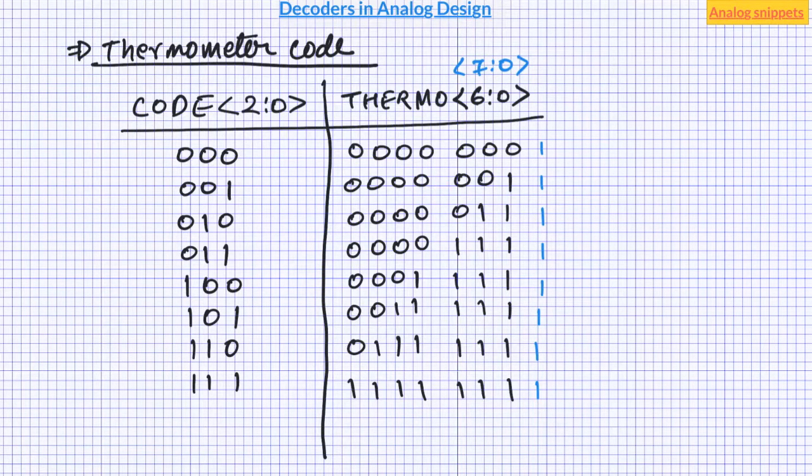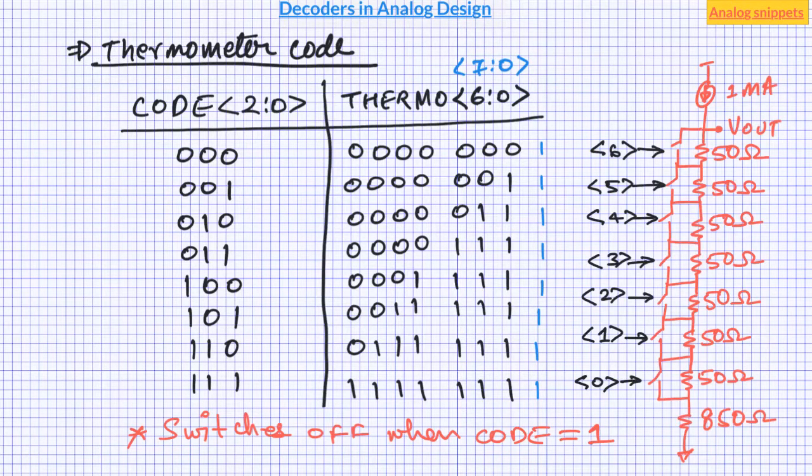Now let's see how thermometer code is implemented. Note that we have considerably more number of switches as compared to binary implementation, although a number of resistors are still same if we assume they are implemented using 50 ohm unit resistors.